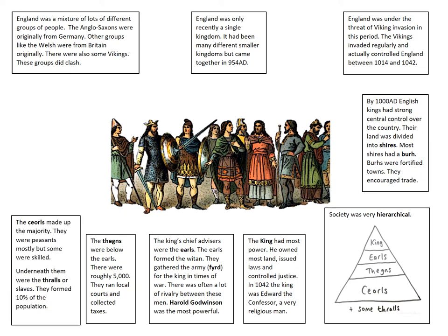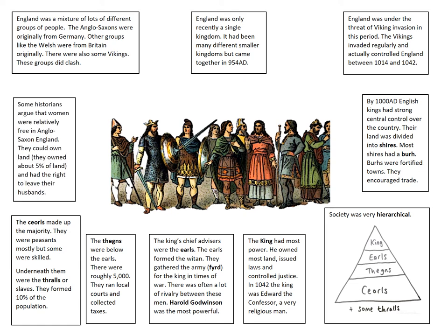Underneath the thanes were the churls, who were the majority of the people in England at this time — they were peasants, though some were very highly skilled. Underneath the churls were the thralls, who were the slaves. England at this time had a slave society, and some historians think up to 10% of the population were slaves. Women are in a really interesting position in Anglo-Saxon society because lots of women were relatively free — they could own their own land, and women owned 5% of land in England at this time. They also had a right to leave their husbands.